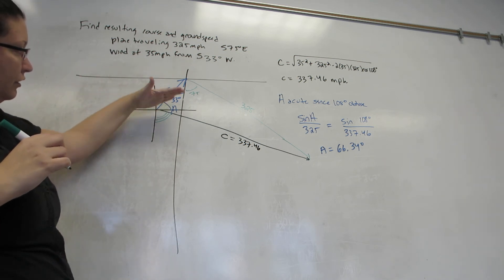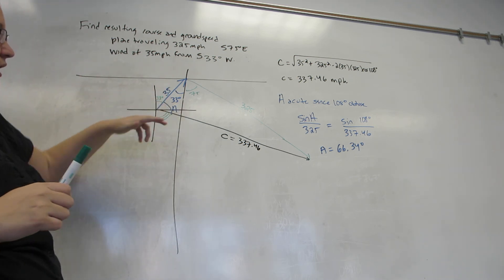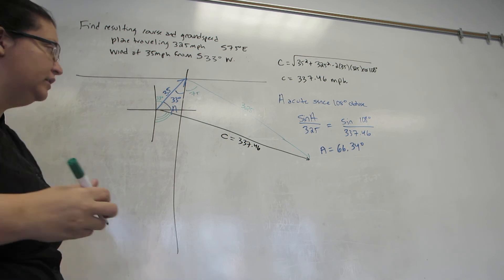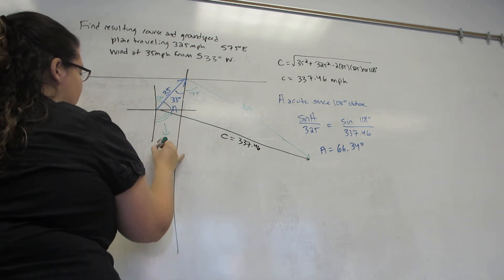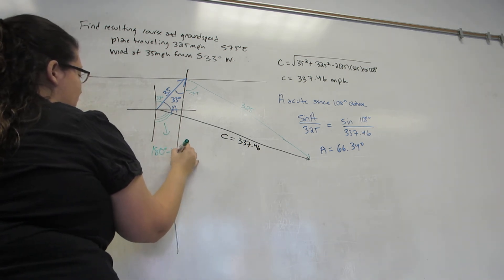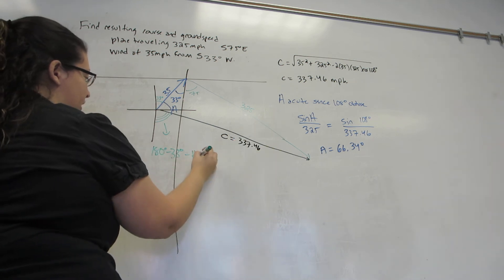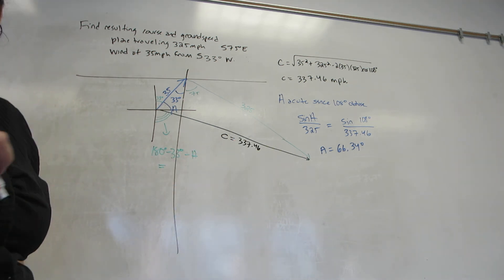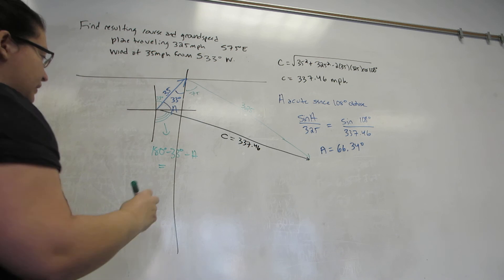So together, the 33 degrees, the angle A, and the angle I want add up to 180 degrees. So my angle is 180 degrees minus 33 minus A, or 80.66 degrees.